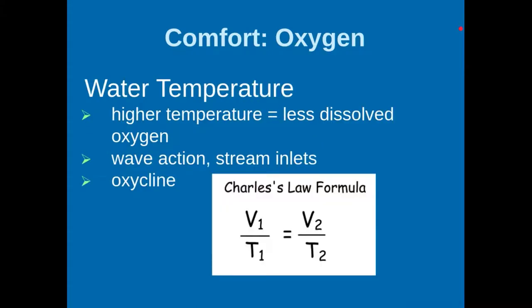Temperature plays a very big role in how much oxygen is in the water. If you remember back to your chemistry days, you studied Charles's Law. Basically it says that the colder a fluid is, the more dissolved gas that fluid can contain. Inversely, the warmer the fluid is, the less dissolved oxygen it contains. So when water temperature is 35 degrees during the middle of winter, it can actually hold a lot of dissolved oxygen. But when that water temperature hits 80, 85, 90 degrees in the summer, it loses that ability to hold dissolved oxygen.